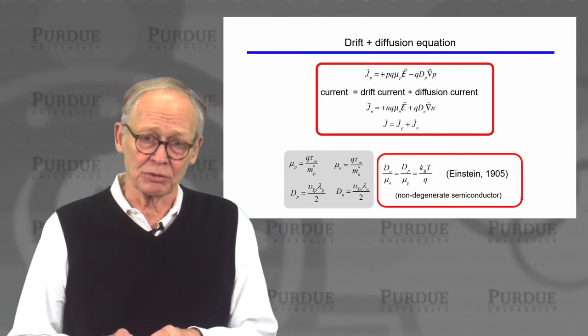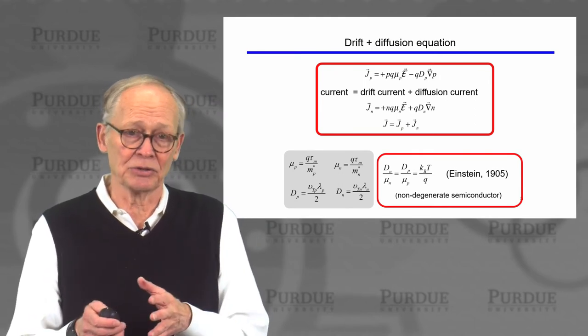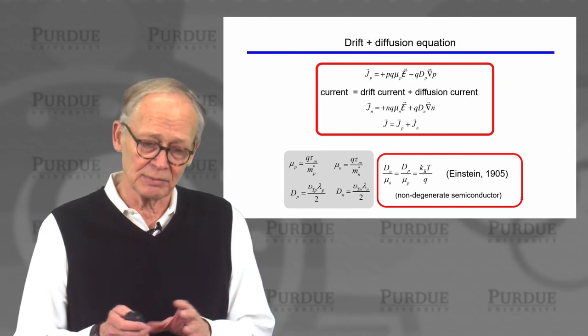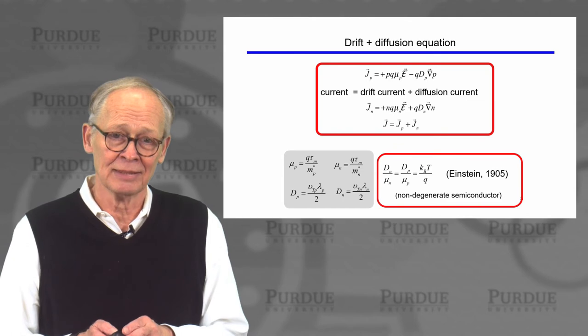And there was this very important relation called the Einstein relation. If we know the mobility, then we know the diffusion coefficient. The two are intimately related by this Einstein relation, which is something that has been known for quite a long time.